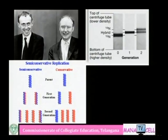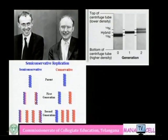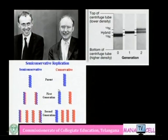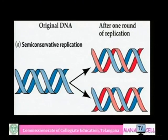In semi-conservative replication, parent (old) strands separate and each synthesizes a new complementary strand. In the first generation, you get one old strand and one new strand in each daughter DNA. In subsequent generations, the old strand is preserved and continues to pair with a new strand. In conservative replication, the two old strands remain together and two entirely new strands form separately — but Meselson and Stahl's experiment confirmed the semi-conservative model.